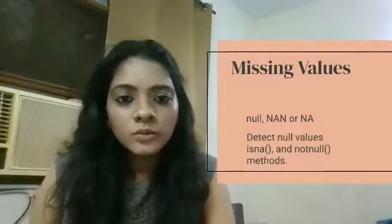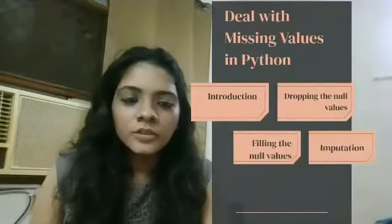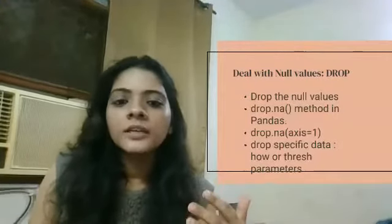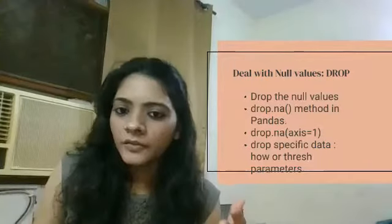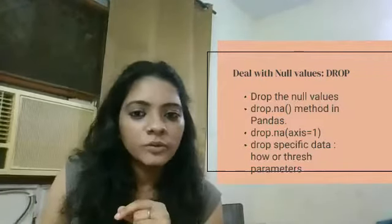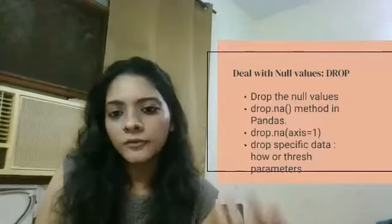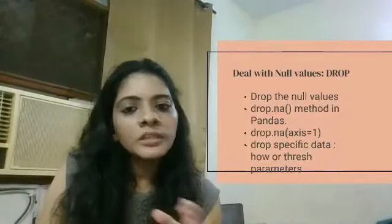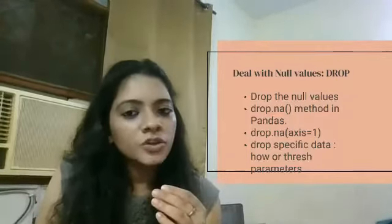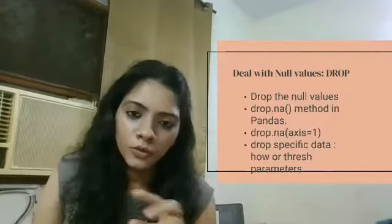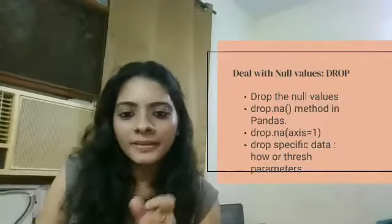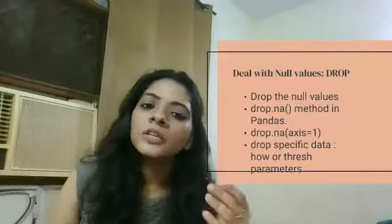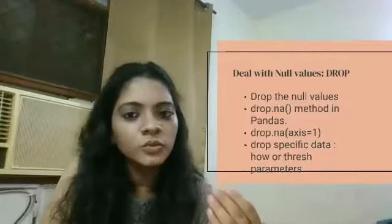Now I'll cover how to deal with these missing values. The first and foremost way is dropping them — just get rid of them. This is the first thing we do, but there are various negative points in that you might lose crucial information if you are dropping a lot of data. There is also a distinction between what you are dropping: either rows, columns, or specific values in your dataset.